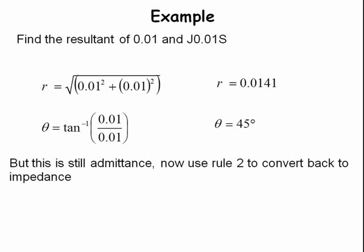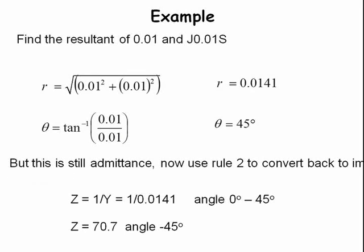We still have to convert admittance back to impedance. We invert the magnitude of the admittance, and that gives us 1 over .0141, which is 70.7. We subtract the angle from 0, which gives us minus 45 degrees. So, our impedance in polar form is 70.7 ohms, with a phase angle of minus 45 degrees.